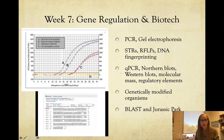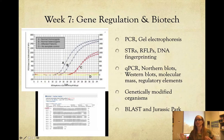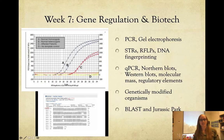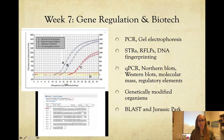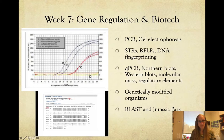Week seven was gene regulation and biotechnology. We went into all those cool techniques — you did Jack the Ripper in the lab. We looked at polymerase chain reaction (PCR), gel electrophoresis to separate by size, short tandem repeats (STRs), and restriction fragment length polymorphisms — where you dump DNA, add a restriction enzyme, and get a DNA fingerprint. We also covered qPCR, northern blots, western blots, molecular mass, regulatory elements, GMOs using plasmids to insert DNA, and used BLAST for sequence alignment like Jurassic Park.